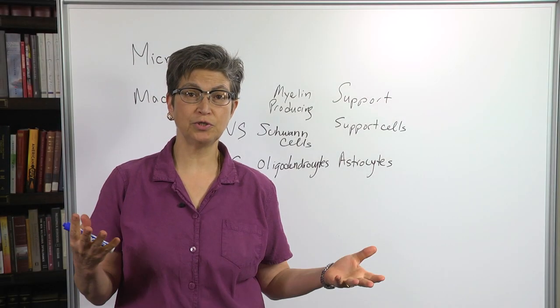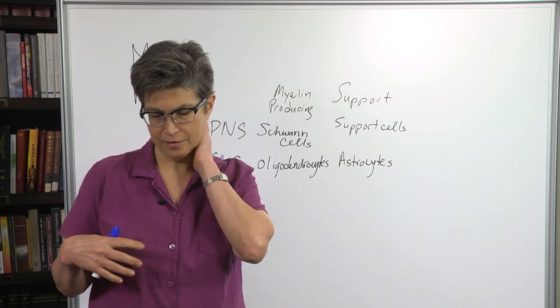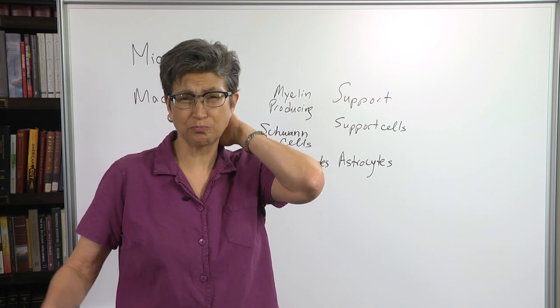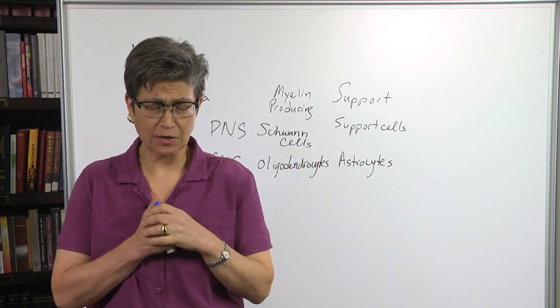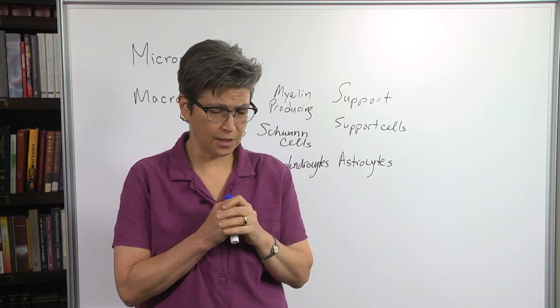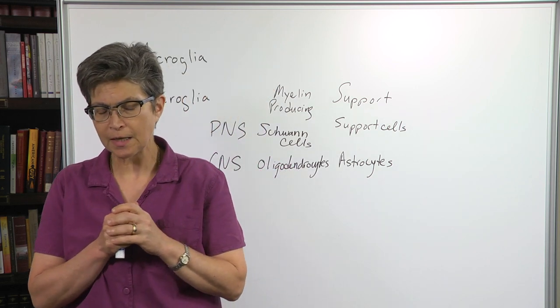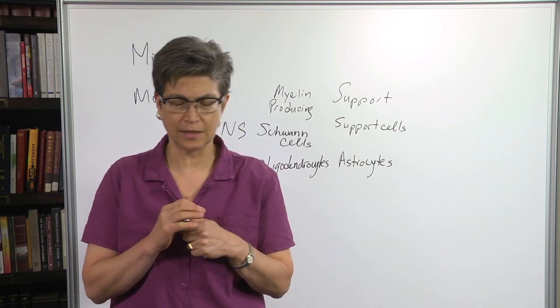So, glia used to be thought of as the proletariat, the extremely numerous cells that were there to serve the neurons. And to a certain extent, that's true.